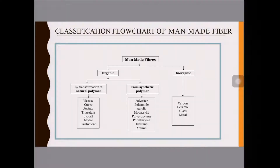The classification divides fibers into two groups: organic and inorganic. Within organic, there are two categories — those manufactured from natural sources, classified as natural polymers, and those synthetically modified, classified as synthetic polymers like polyester, polyamide, acrylic, modacrylic, and polypropylene. Natural polymers include viscose, cuprammonium acetate, triacetate, and lyocell. Inorganic polymers include carbon, ceramic, glass, and metal.